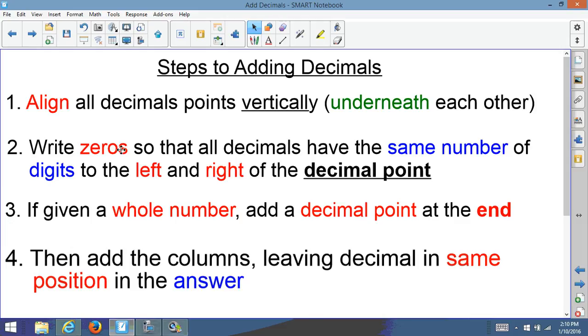Step 2, write zeros so that all decimals have the same number of digits to the left and to the right of the decimal point.